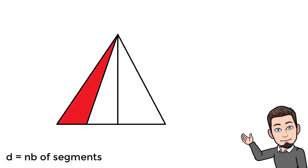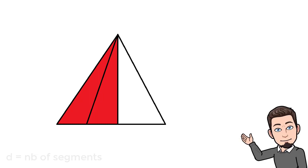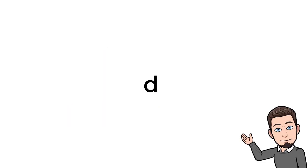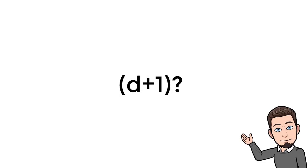The same concept applies: for every new segment added, at d segments we have d+1 new triangles. So generally speaking, the formula that counts these first-degree triangles is equal to (d+1)? — that is, the triangular number of (d+1). And with this, we finish Chapter 1.